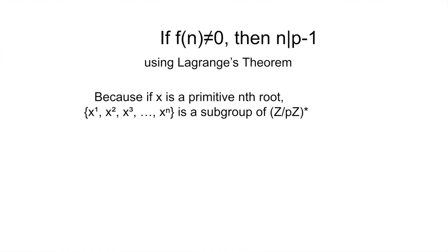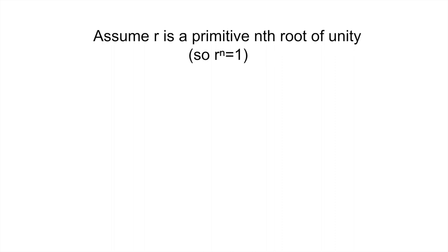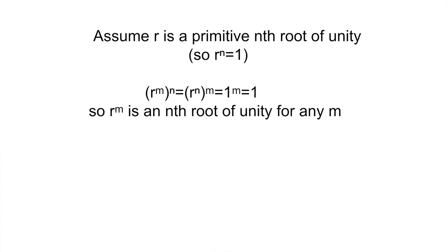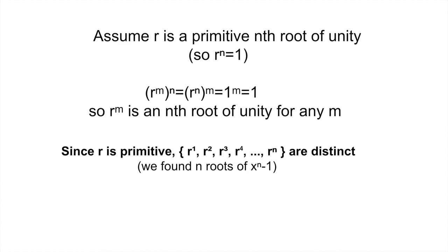So now let's assume that there is at least one primitive nth root of unity, and let's call it r. Clearly, any power of r is also an nth root of unity. Because r, r squared, all the way up to r to the n are all distinct, we have found n roots of the equation x to the n minus 1. But a polynomial of degree n can never have more than n roots in any field, so these must be the only roots of x to the n minus 1.